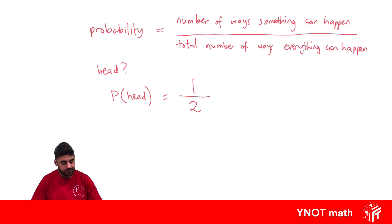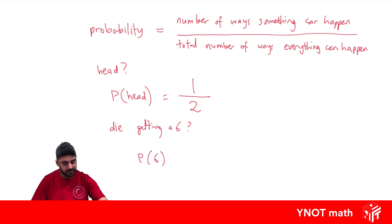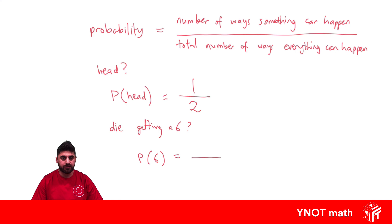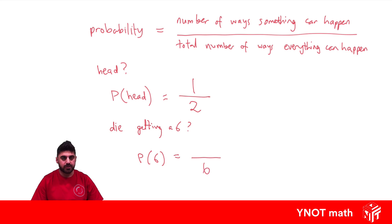What about when we roll a die? What's the probability of getting a six? We can write that as the probability of getting a six. Using our definition, the total number of ways everything can happen: when we roll a die, we can get a one, two, three, four, five, or six — so there are six total outcomes. Only one of those gives us a six, so the probability of getting a six is one over six.